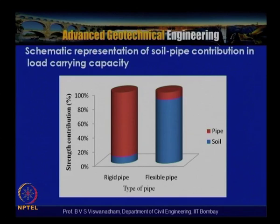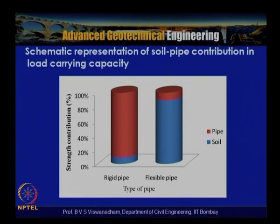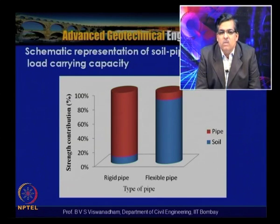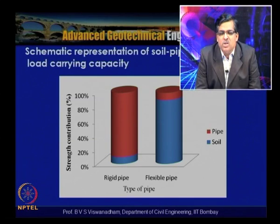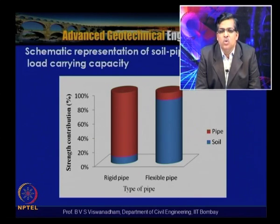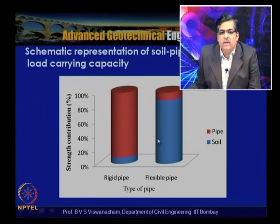A schematic of soil-pipe load contribution shows that a rigid pipe carries approximately 80% of the load while the soil carries only 20%. For a flexible pipe, the soil bears almost the entire load and the pipe carries only about 20%. Because of active arching, the flexible pipe attracts less load and transfers it to the surrounding non-yielding portions. The chart clearly shows that a rigid pipe has much higher load apportioning capability than a flexible pipe.